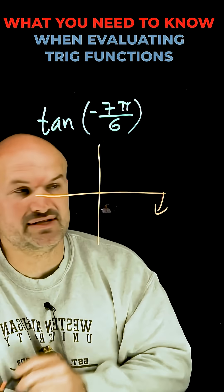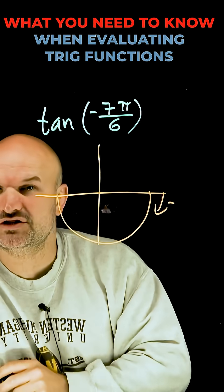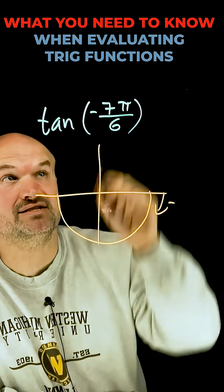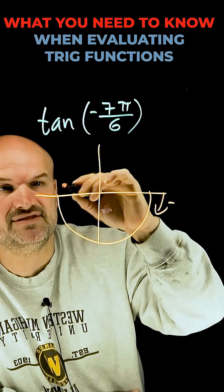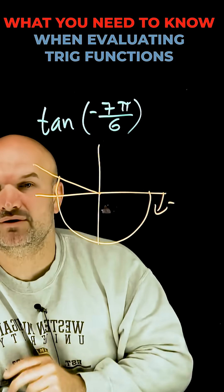We know when graphing angles in standard form, the negative direction is going to be clockwise. We know that halfway around a circle is pi. In terms of a denominator of 6, we can think about that as 6 pi over 6. So 7 pi over 6, or negative 7 pi over 6, is going to be an extra pi over 6 passed halfway around the circle.